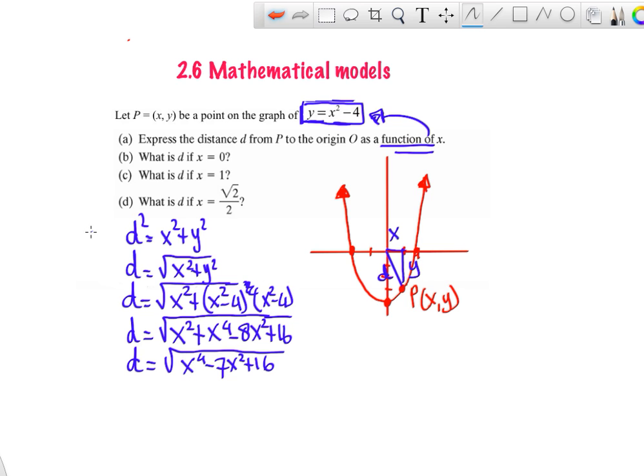So finally we get to the distance as a function of x is x to the fourth minus 7x squared plus 16. Okay, there's our model. So that was A. B. Find the distance if x is 0. So d of 0 is, let's see, the square root of 0 minus 0 is 0, so the square root of 16 is 4.